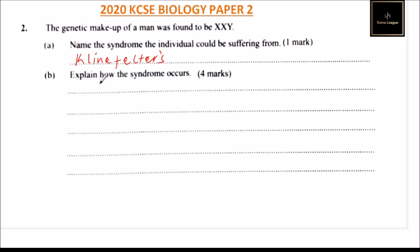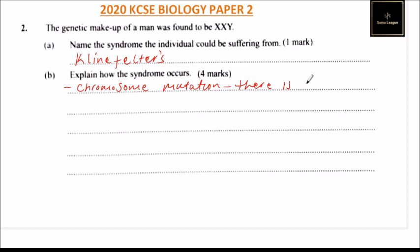Part B: Explain how the syndrome occurs. The syndrome occurs — one of the ways is a chromosomal mutation. When the chromosomes mutate, there is an addition of an extra X chromosome. So that's one way.